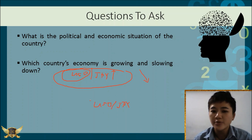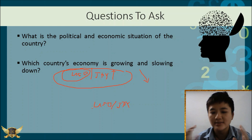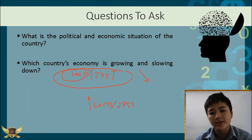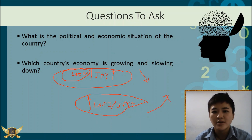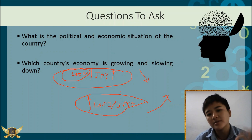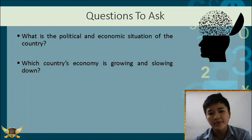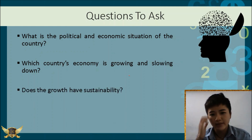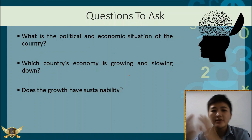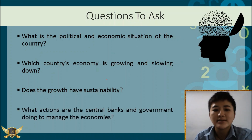What if both countries are growing? If the growth of the United States is faster than the growth of Japan, then net-net the currency would appreciate. On the other hand, if the growth of Japan is faster, then the overall currency would depreciate. After you determine the growth, you need to determine whether this growth is sustainable or not — because some economic growth can last for a very long time and some for a very short amount of time.